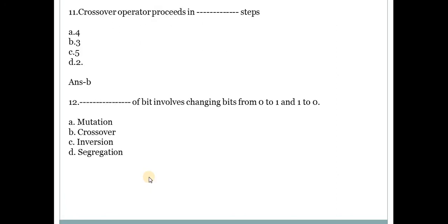Next question. Dash of bit involves changing bits from 0 to 1 and 1 to 0. Answer is A, mutation. Using mutation, bits are changed from 0 to 1 and from 1 to 0.